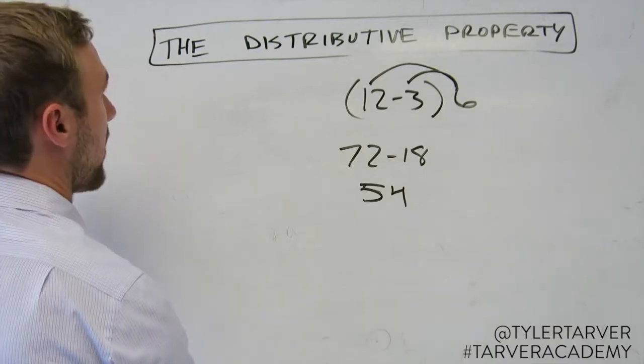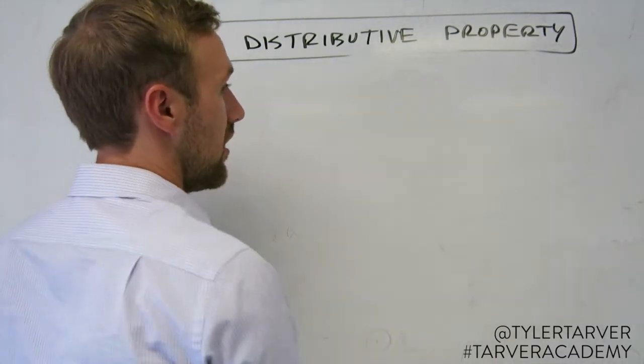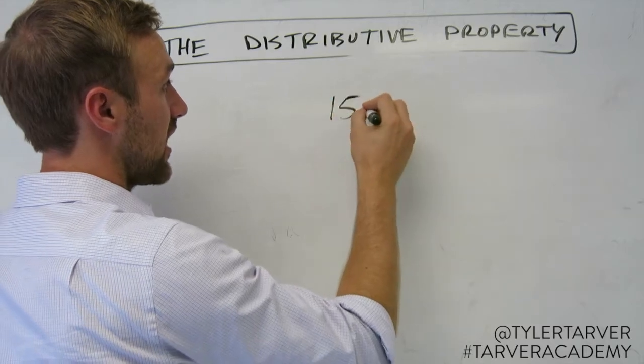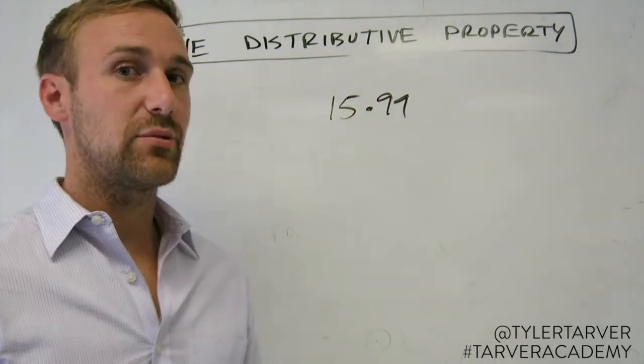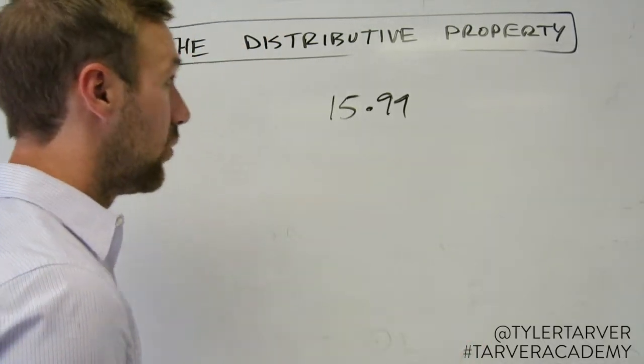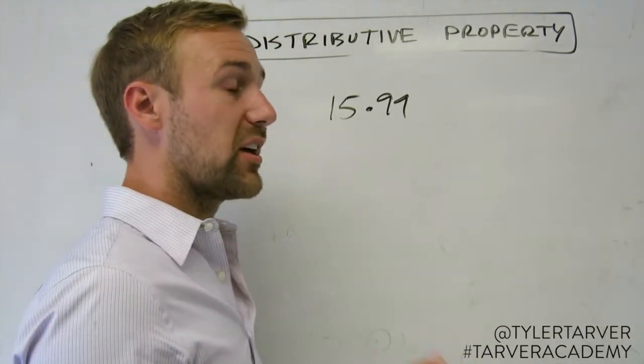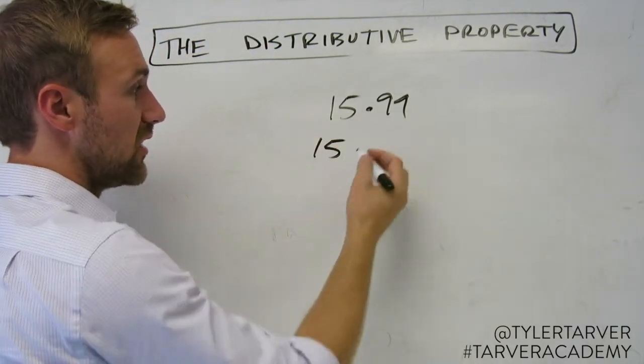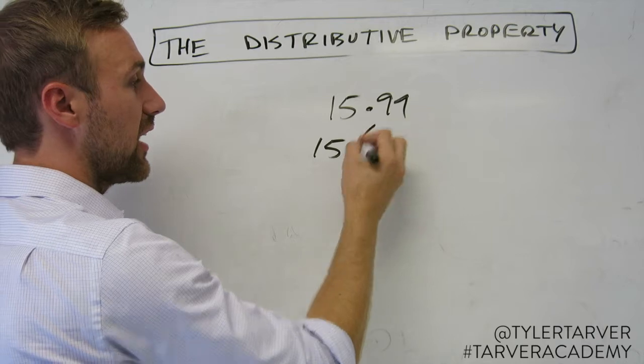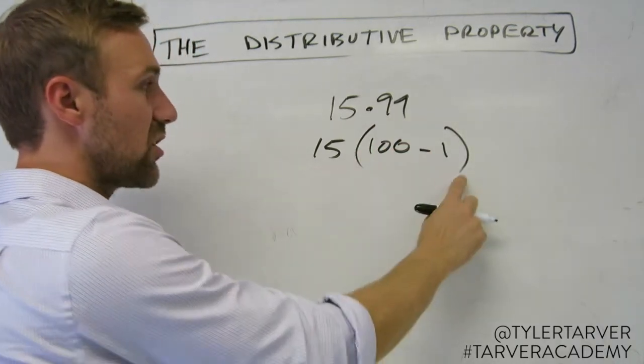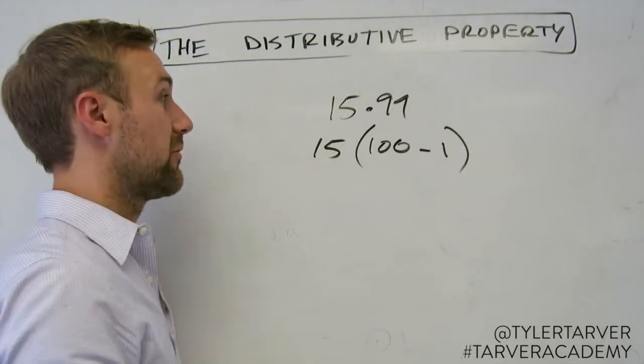Let's look at some advanced distributive property. An advanced example would be something like this: 15 times 99. First thing that sticks out when you hear 99 - you think 99, 100. Well, guess what? The distributive property can allow us to solve this problem a little quicker, maybe even in our heads. So we've got 15. I know 99 is the same as what? 100 minus 1.